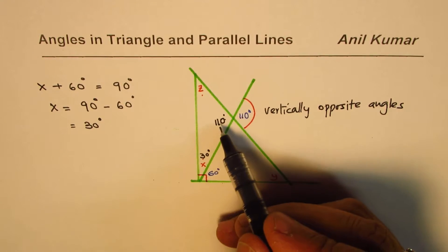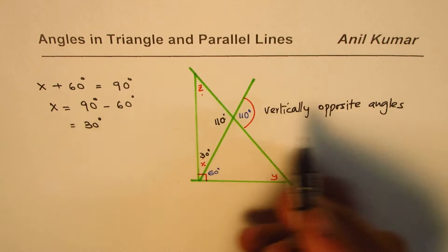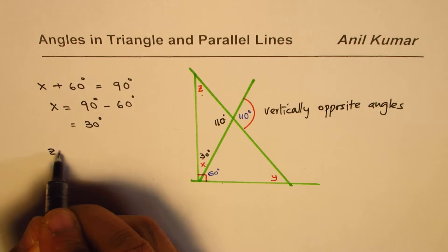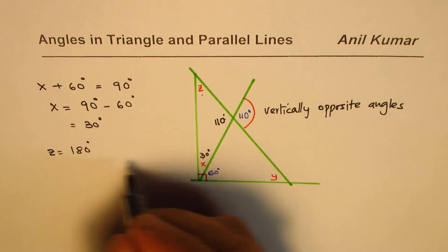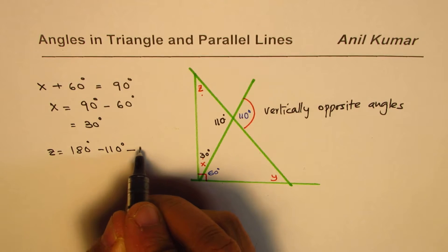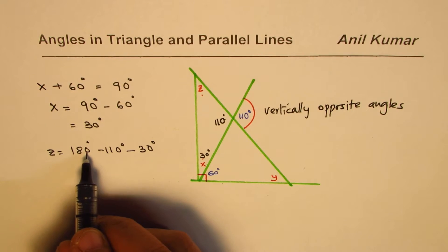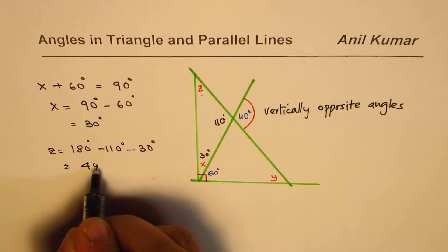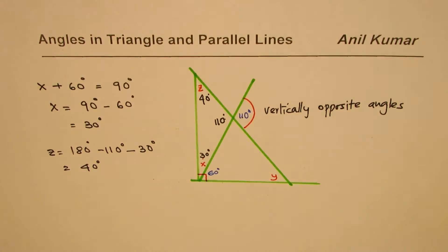Now it is simpler. Since we know these two angles in this triangle, we can find z. The total is 180, so always start with 180 degrees and take away the other angles. In this case, 110 and 30 degrees. When you take away 110 from 180, you get 70, minus 30 is 40 degrees. You can use a calculator also to solve. So we get 40 degrees.